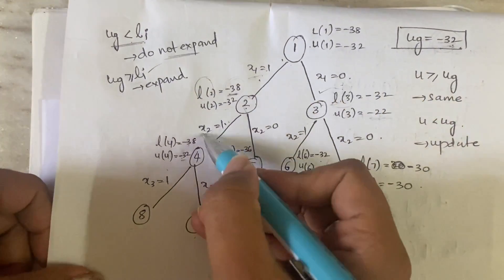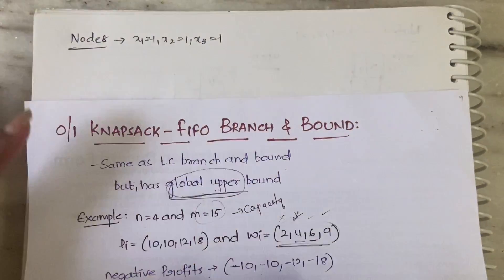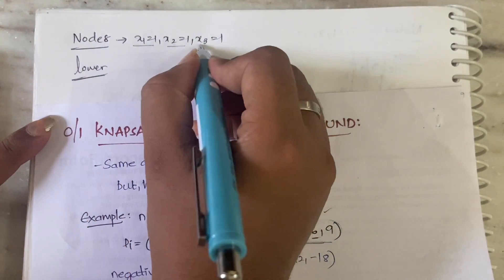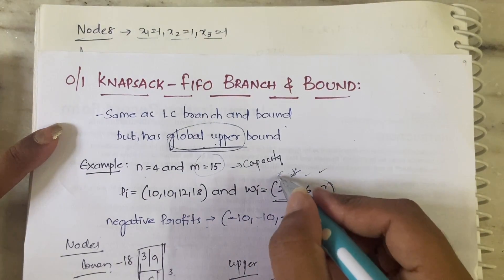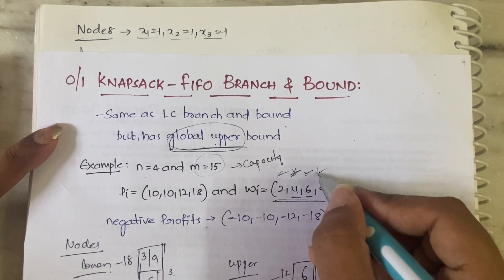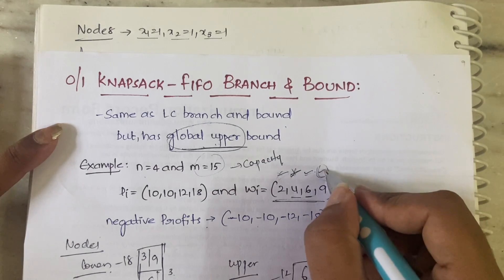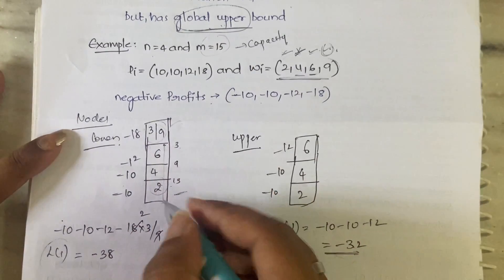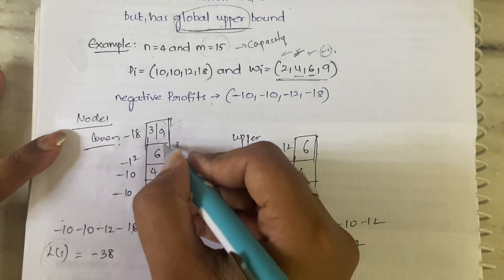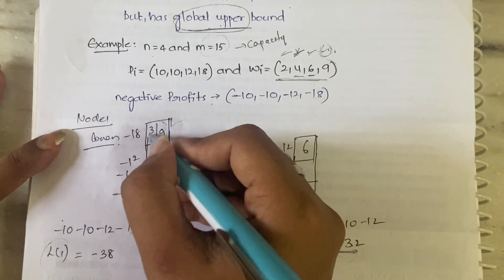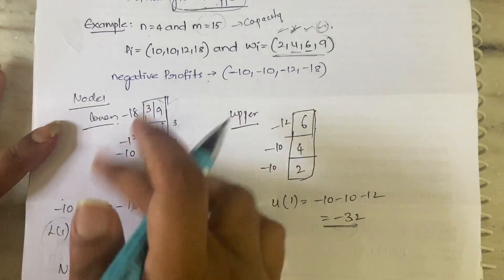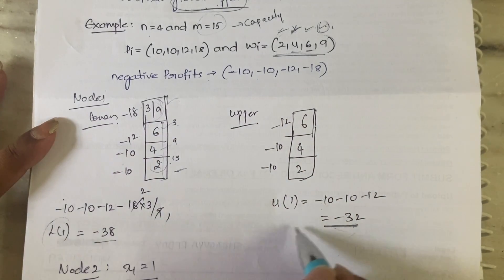So what was the condition for node 8? x1 is equal to 1, x2 is equal to 1, and x3 is equal to 1. We have to calculate the lower bound. x1=1, x2=1, x3=1 means you are keeping 2, keeping 4, keeping 6, and if there is more place for 9 then you are keeping 9, otherwise you give the fractional part of 9. So this is the same scenario as before.